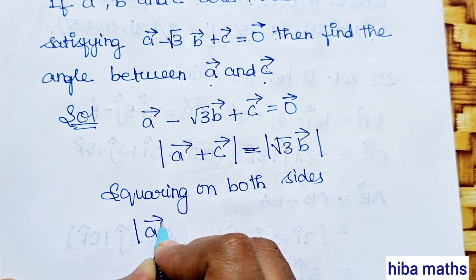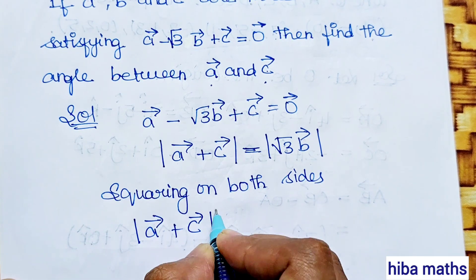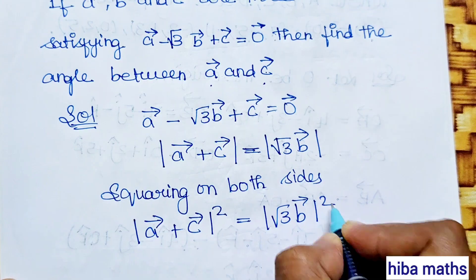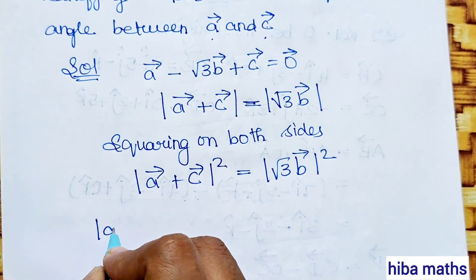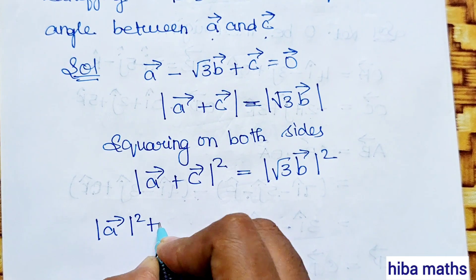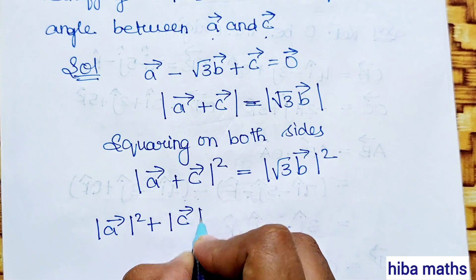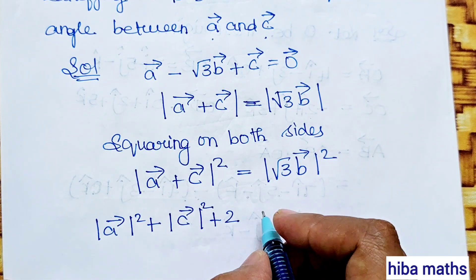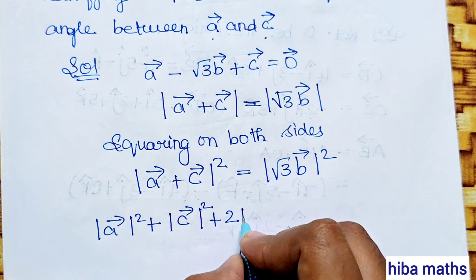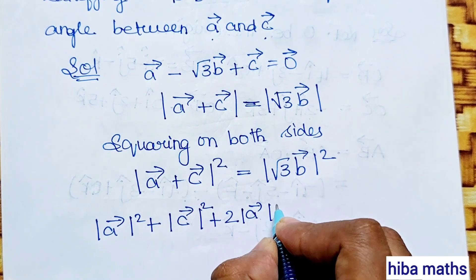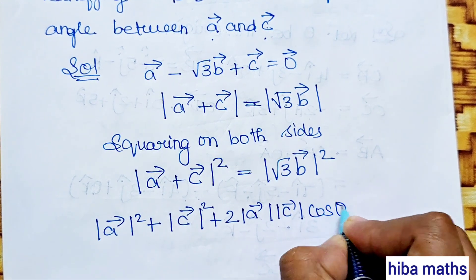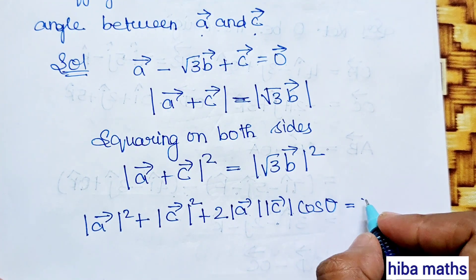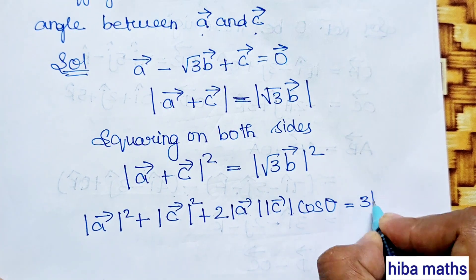The modulus of (a vector + c vector) whole square equals modulus of √3 b vector whole square. Expanding the left side: |a|² + |c|² + 2·|a|·|c|·cos θ = 3·|b|².